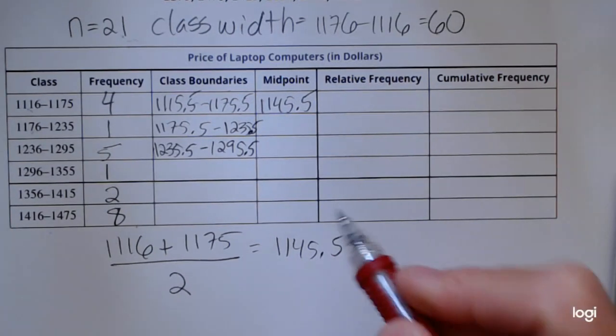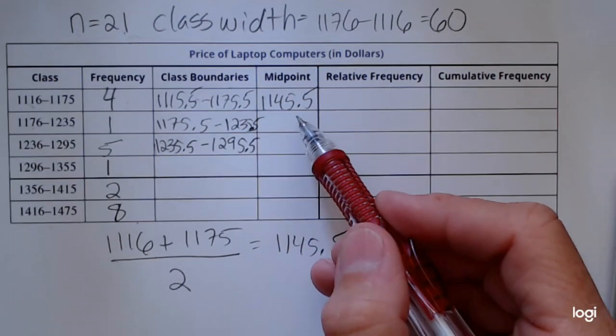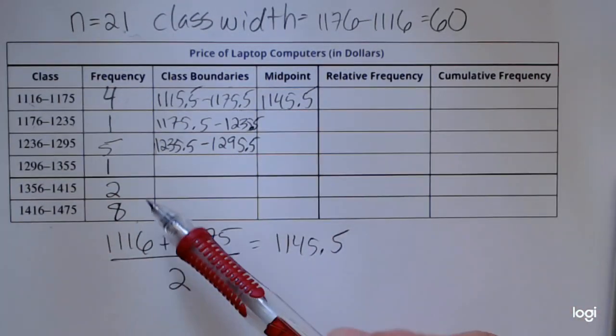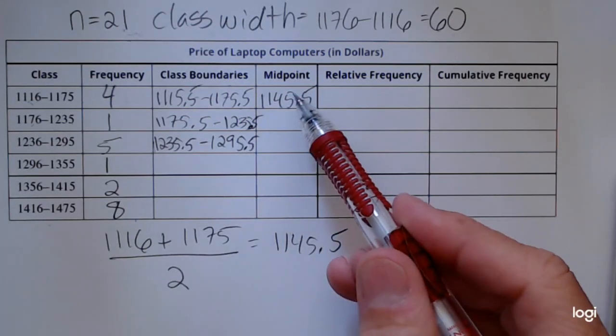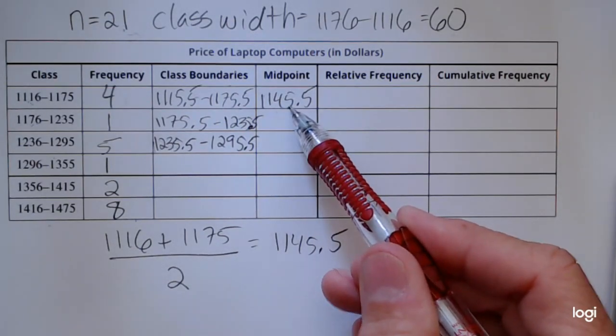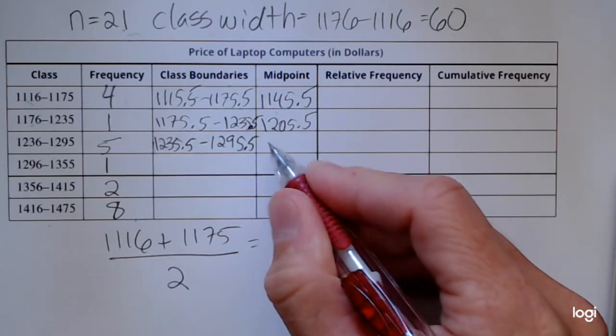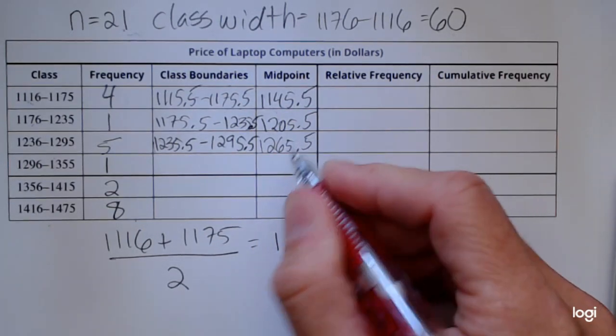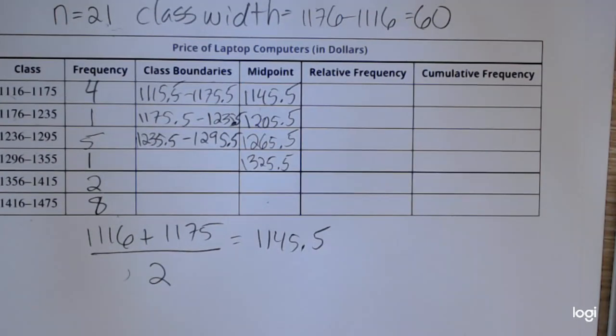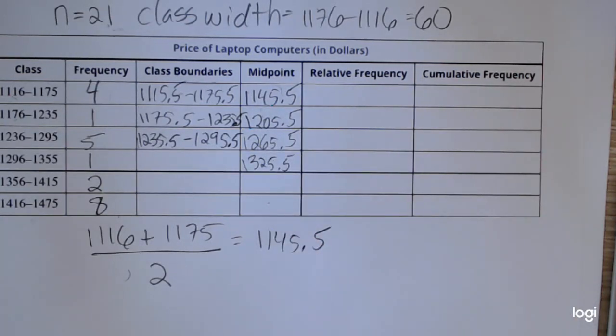I prefer to use midpoints, or you could go ahead and use class boundaries as the tick marks on your horizontal axis. It doesn't change the shape of the histogram at all. Now I could go ahead and do this similar calculation for each class, but I'm going to use the fact that all of these are equally spaced. So the midpoints would also be equally spaced. To find the next midpoint, I'm just going to take 1145.5 and add 60 to it to get 1205.5.